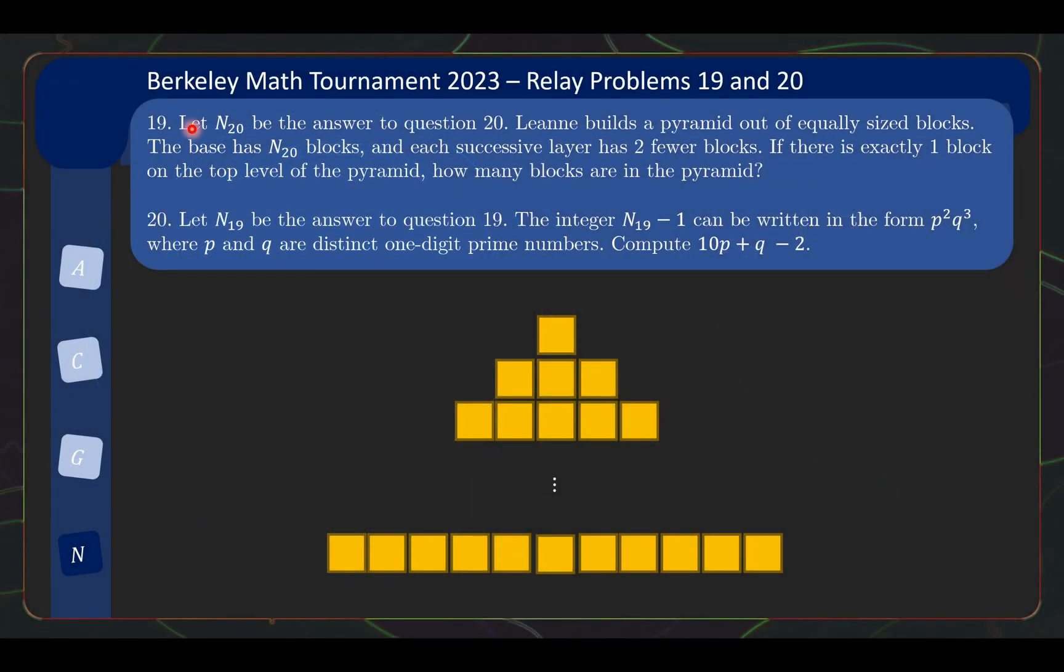So over here, we have problems 19 and 20 from the tournament. Question 19 uses the answer to question 20. We let N20 be the answer to question 20, and Lane builds a pyramid out of equally sized blocks. The base has N20 blocks, and each successive layer has two fewer blocks, and there's exactly one block on the top of the pyramid. So how many blocks are there in this pyramid? That's question 19.